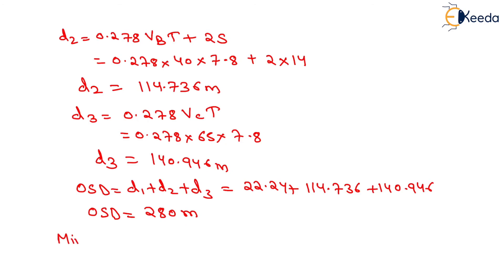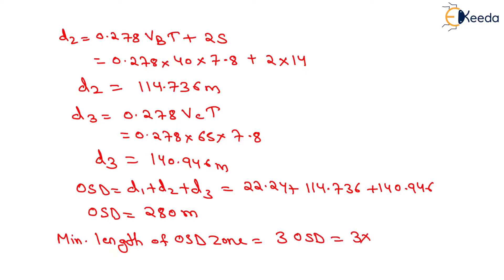The minimum length of the OSD zone will be equal to 3 times OSD. On putting the value of OSD as 280, it will be equal to 840 meters. That will be the minimum length of the OSD zone, which is equal to 840 meters. That is all about this numerical. Thank you very much, students.